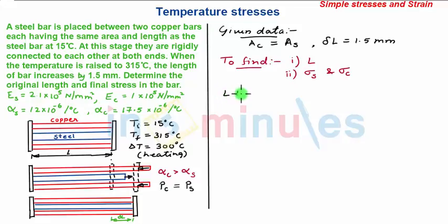Next we find the original length of the system. For this, we again use the delta L equation. We have delta L as 1.5 mm. This delta L can be either delta L of steel rod or delta L of copper bar.